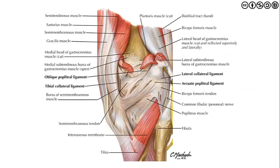In this image we see the lateral side again but with a slightly different orientation, more into the posterior portion. We can visualize the lateral collateral ligament as well as the arcuate popliteal ligament. Here we can also visualize the plantaris muscle that has been cut and reflected back, as well as the lateral subtendinous bursa and the gastrocnemius muscle. One of the nice features of this image is we can visualize the fibula and where the common peroneal or fibular nerve begins to come down and wrap around the fibular head.